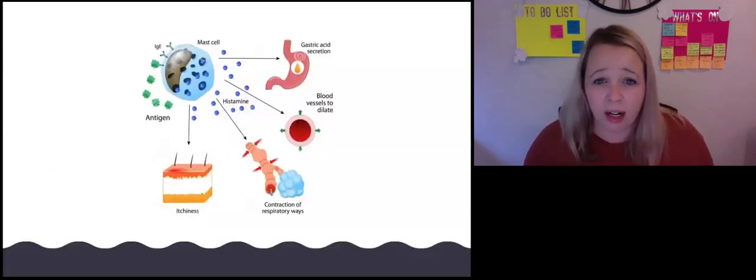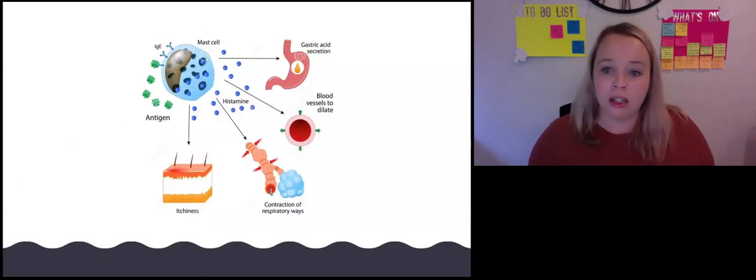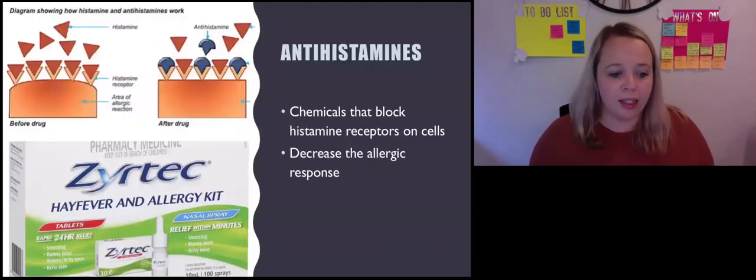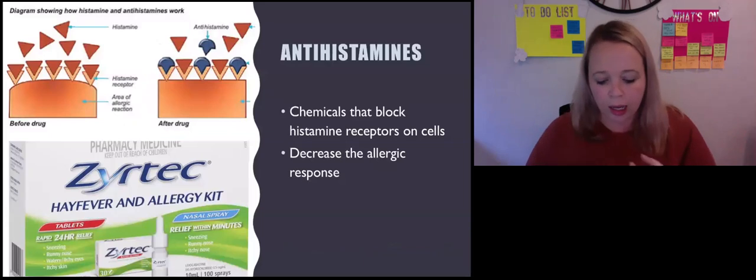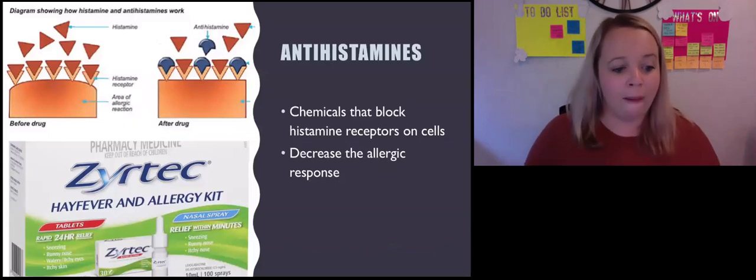The last little bit on allergies is the fact that we can take things to stop these from happening or to stop them from being so severe. The first thing we take is an antihistamine. You might've taken Zyrtec, Claritin, something like that. What an antihistamine does is here's where you would get your allergic reactions.